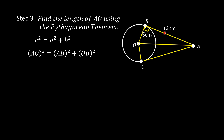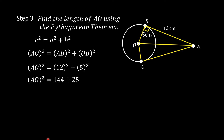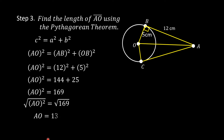Substituting 12 for AB and 5 for OB: AO squared equals 12 squared plus 5 squared, which equals 144 plus 25, giving AO squared equals 169. Extracting the square root of both sides, AO is equal to 13 centimeters. So the length of segment AO is 13 centimeters.